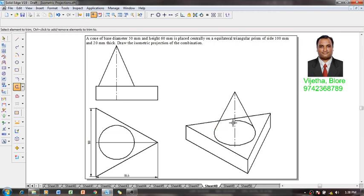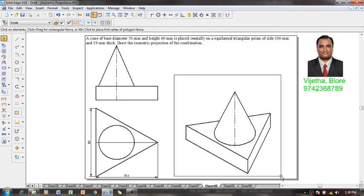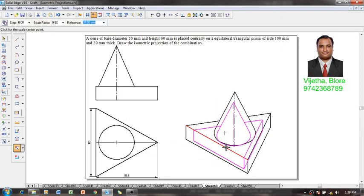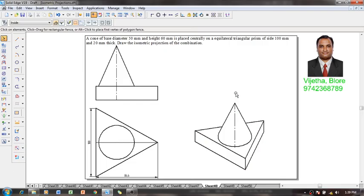Now one can see that the isometric view or drawing has been completed. Select this figure, go to a command called scale, then reduce it to isometric projection scale factor of 0.8164 times. Now one can see that the isometric projection of the given combination is completed in all aspects.